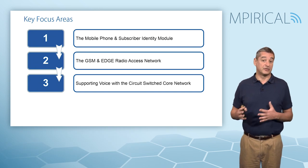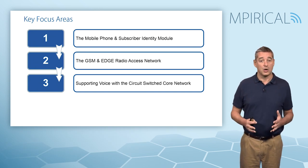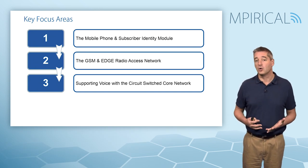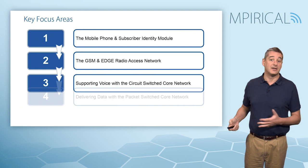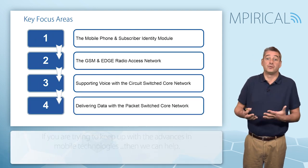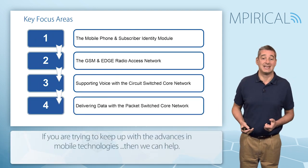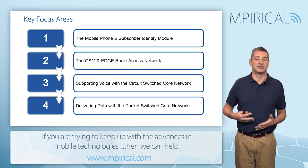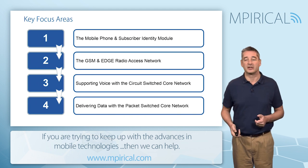We'll then turn our attention to the core network: the circuit switch core, which we use for making and receiving calls, and the packet switch core, which we use for connecting to the internet, downloading web pages, and sending emails.